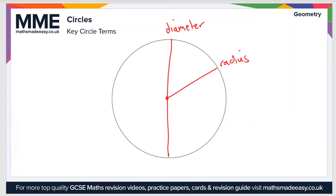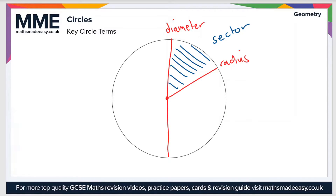Now the area between two radii — radii being the plural of radius — is known as a sector.